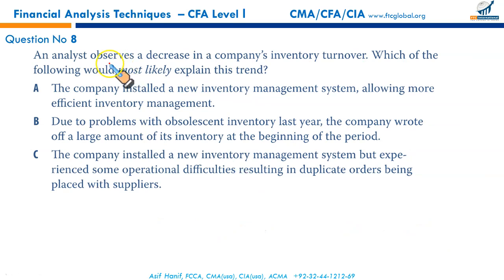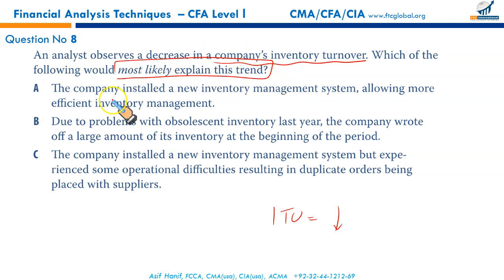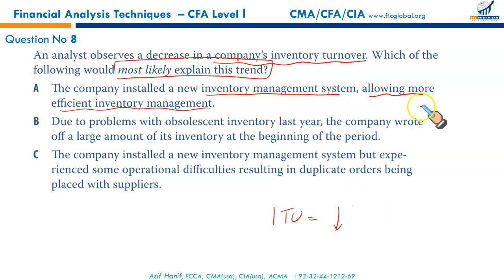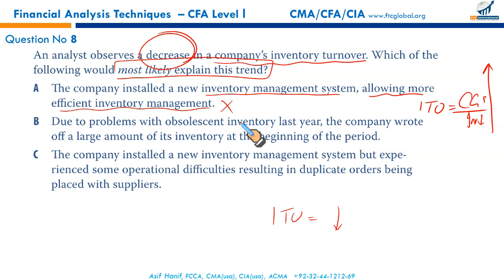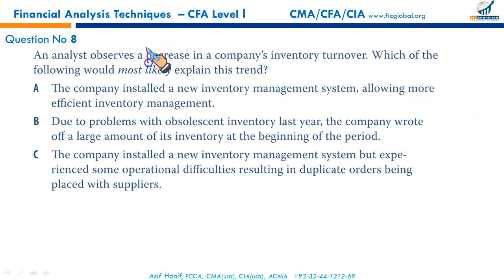Next: an analyst observes a decrease in a company's inventory turnover — meaning inventory is sold less frequently. Which would most likely explain this trend? Option A: a new inventory management system allowing more efficient inventory management would result in lower inventory, meaning the denominator falls and inventory turnover should increase — but the question requires a decrease, so this is wrong. Option B: writing off a large amount of obsolete inventory reduces average inventory, causing the denominator to fall and ratio to improve — also resulting in an increase in ITO, not a decrease. Wrong.